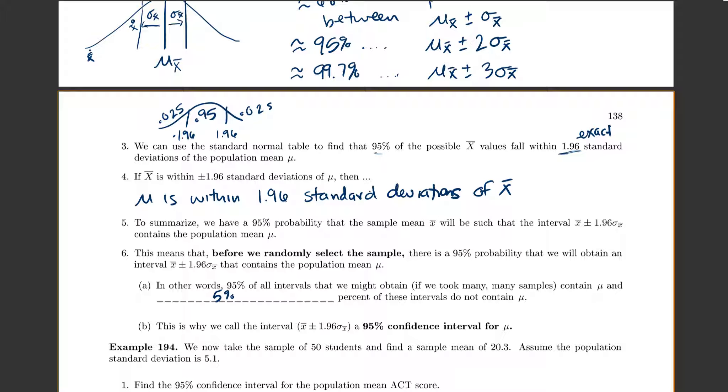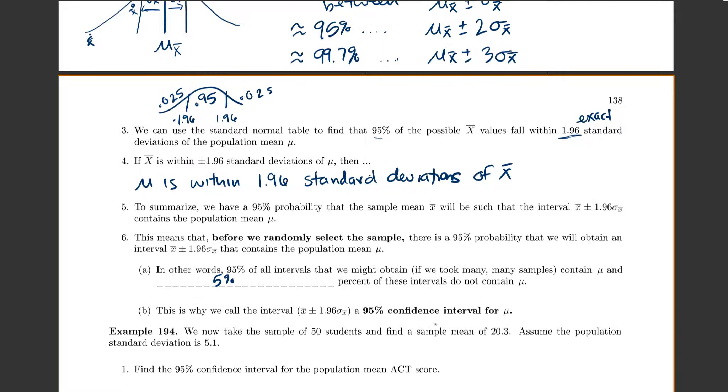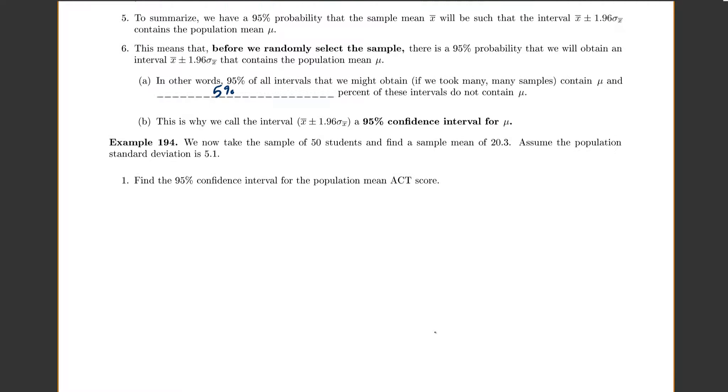And this is why we call our interval, x-bar plus or minus 1.96 sigma x-bar, a 95% confidence interval for mu. So that was lots of theory. Let's actually try this. So we now take our sample of 50 students. So we know n equals 50. We find a sample mean of 20.3. And the standard deviation is 5.1.